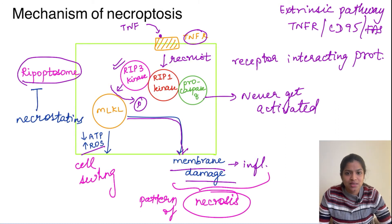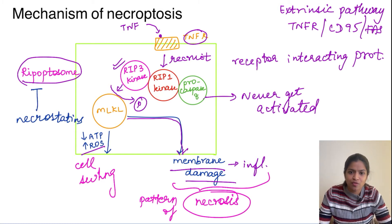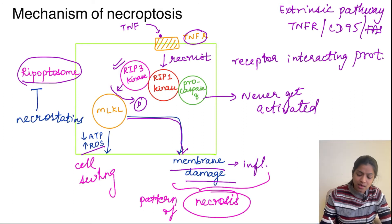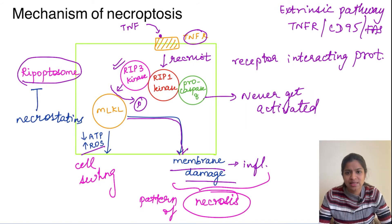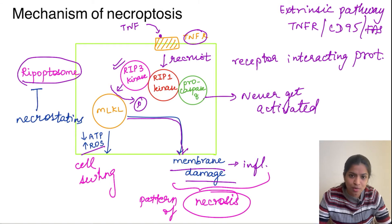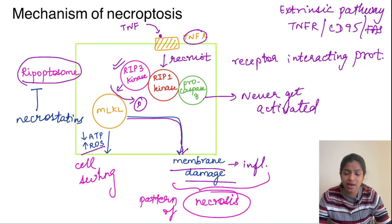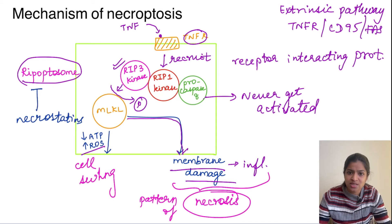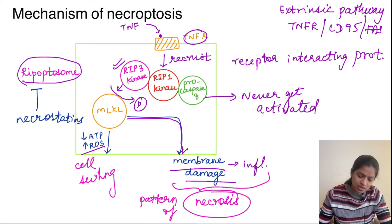In cancer chemotherapy, apoptosis is the most important pathway for cell death. However, tumor cells can develop mechanisms to evade apoptosis. New chemotherapy strategies are being developed based on necroptosis so that cancer cells which evade apoptosis can still be killed via this different pathway, making necroptosis clinically important in cancer therapy as well.